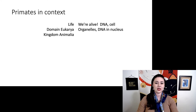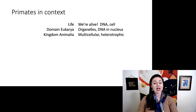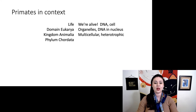We are in domain Eukarya, which means we have a specific type of cellular structure. We have organelles that carry out different functions within our cells, and we also have our DNA encased in the nucleus. Within domain Eukarya, we are in kingdom Animalia, so we are multicellular and heterotrophic — we consume other things for food.